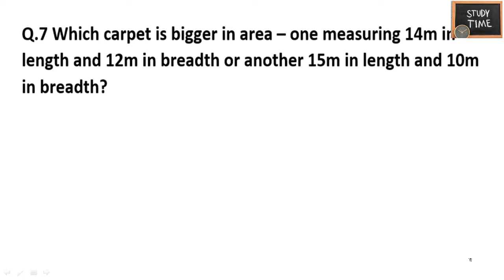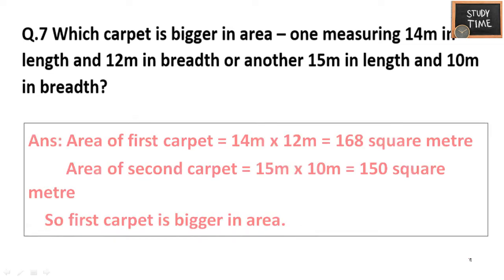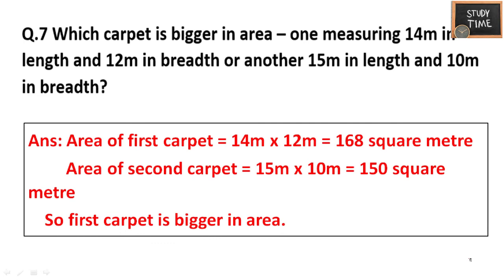Which carpet is bigger in area? One measuring 14 meters in length and 12 meters in breadth, or another measuring 15 meters in length and 10 meters in breadth? First carpet area is 14 into 12 = 168 square meters. Second carpet area is 15 into 10 = 150 square meters. The first one is bigger at 168 square meters.